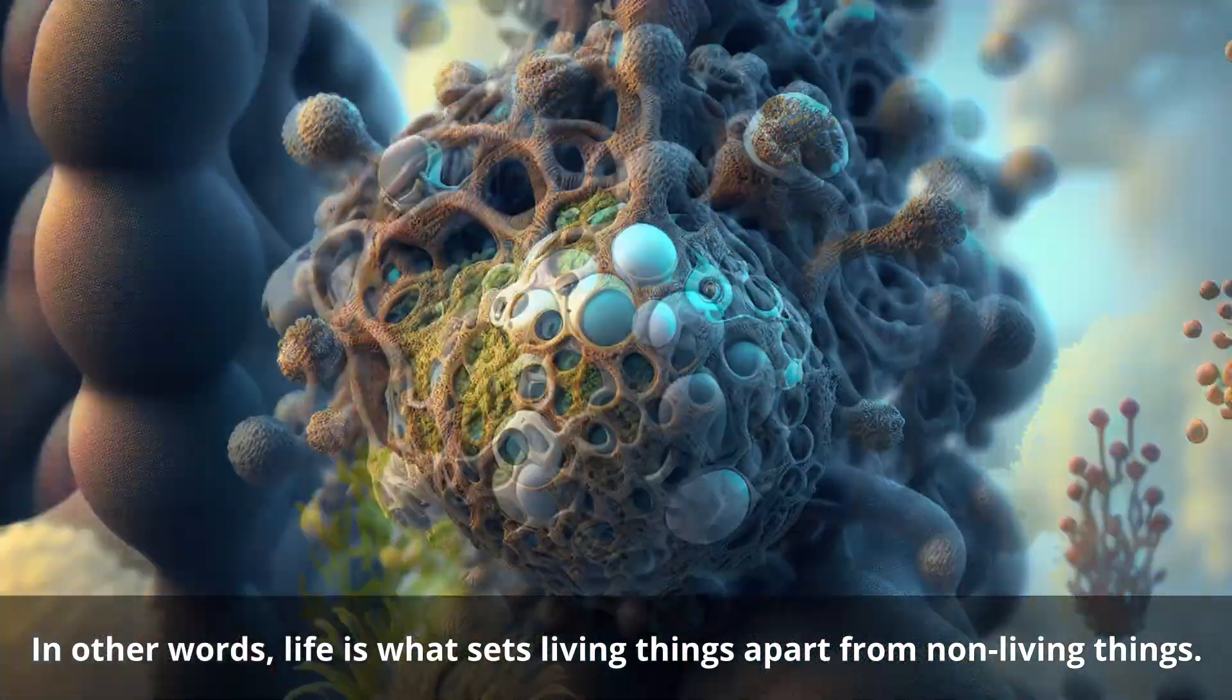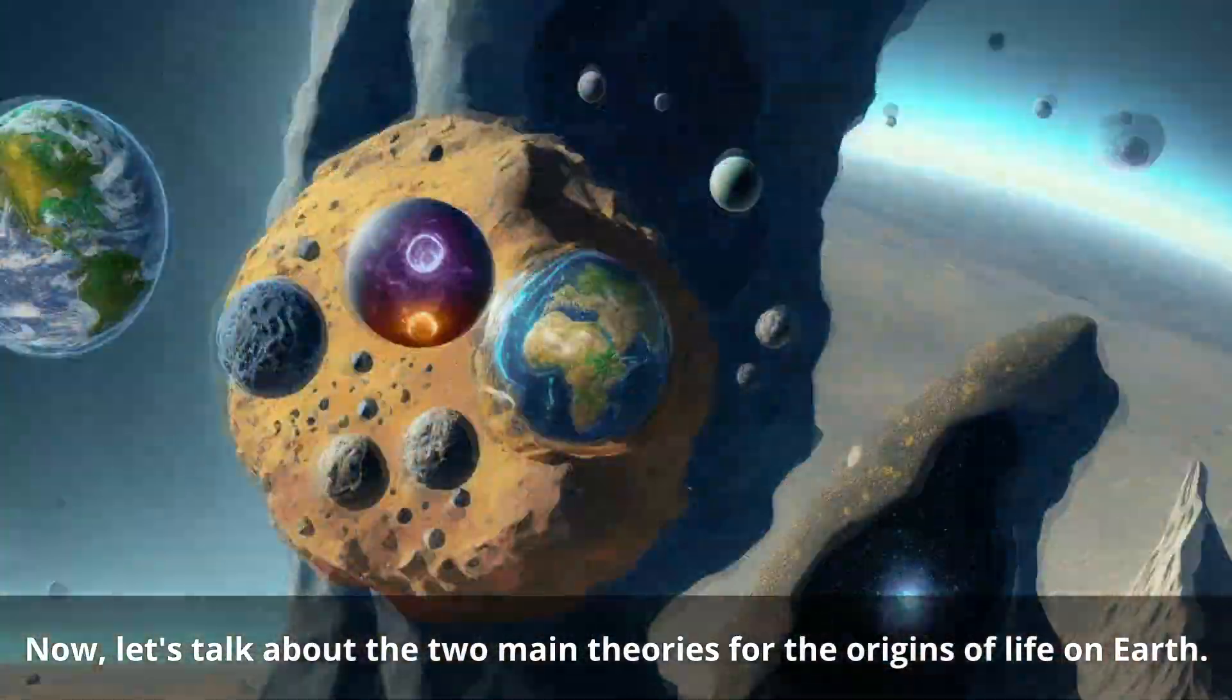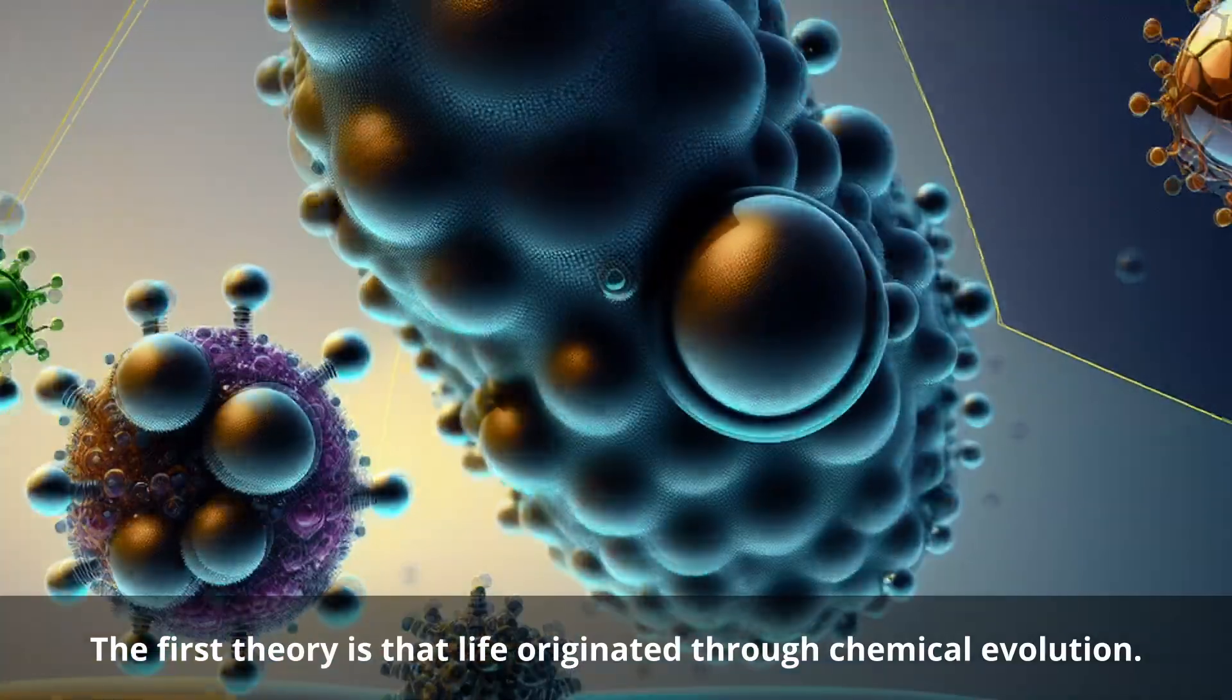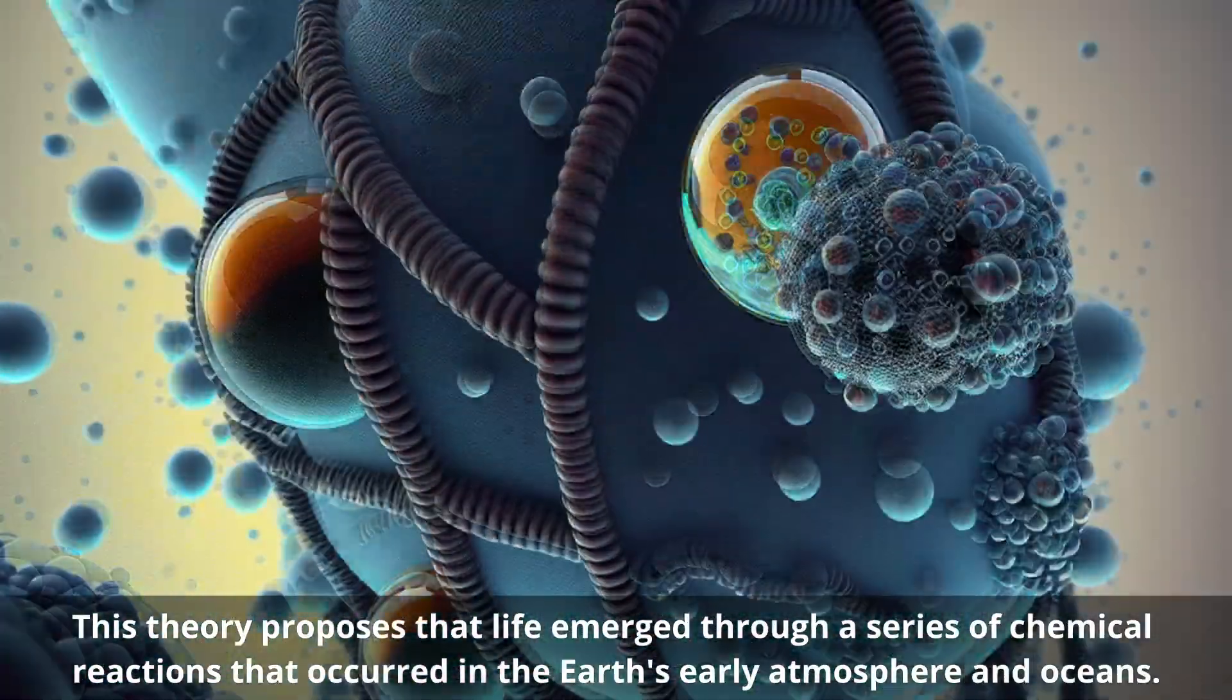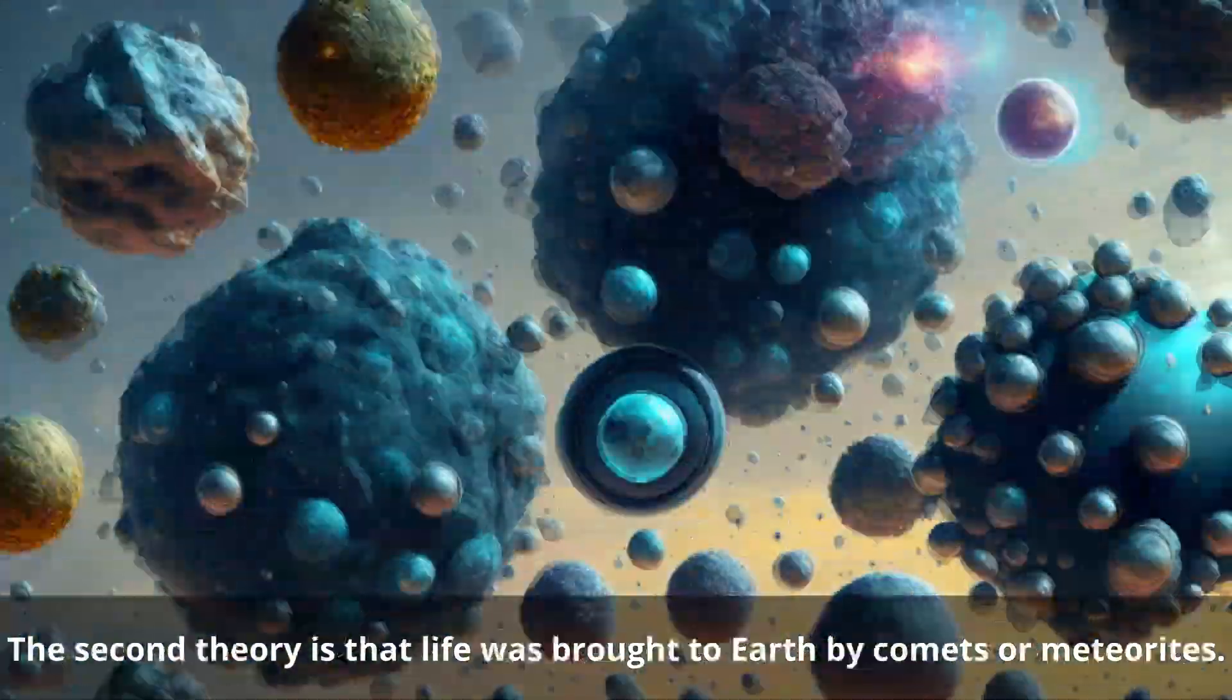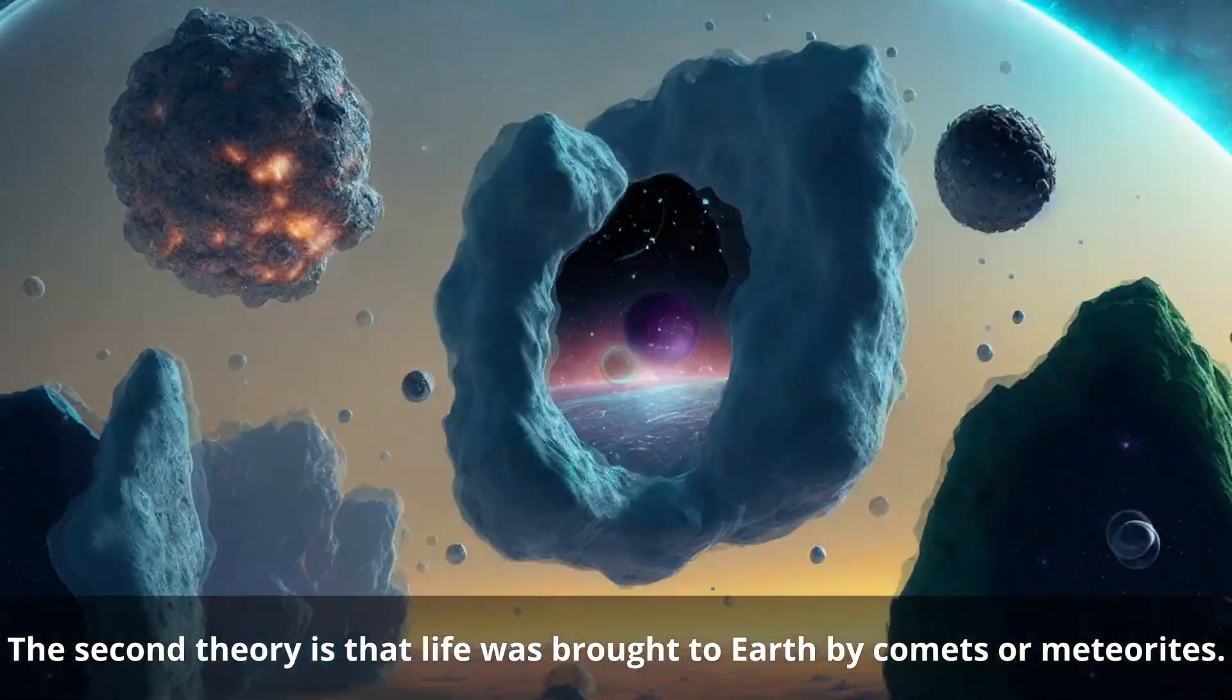In other words, life is what sets living things apart from non-living things. Now let's talk about the two main theories for the origins of life on Earth. The first theory is that life originated through chemical evolution. This theory proposes that life emerged through a series of chemical reactions that occurred in the Earth's early atmosphere and oceans. The second theory is that life was brought to Earth by comets or meteorites.